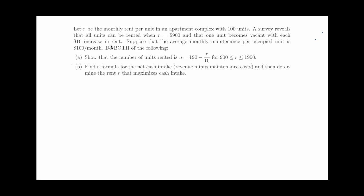Let's let R be the monthly rent per unit in an apartment complex that has 100 units in it. A survey reveals that all units can be rented when R, the rent, the monthly rent, is $900, and that one unit becomes vacant for every $10 increase in rent. Suppose that the average monthly maintenance per occupied unit is $100 a month. So we're going to do a couple of things here. Eventually we're going to find a formula for the net cash intake, which is revenue minus maintenance costs, and then find the rent that maximizes cash intake. Something very useful in the real world.